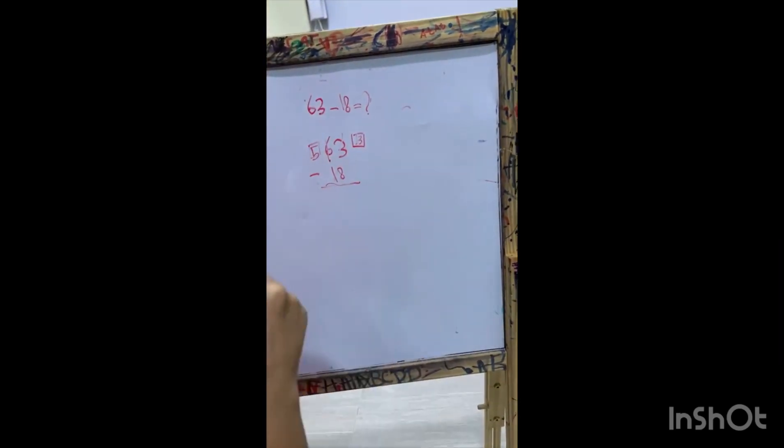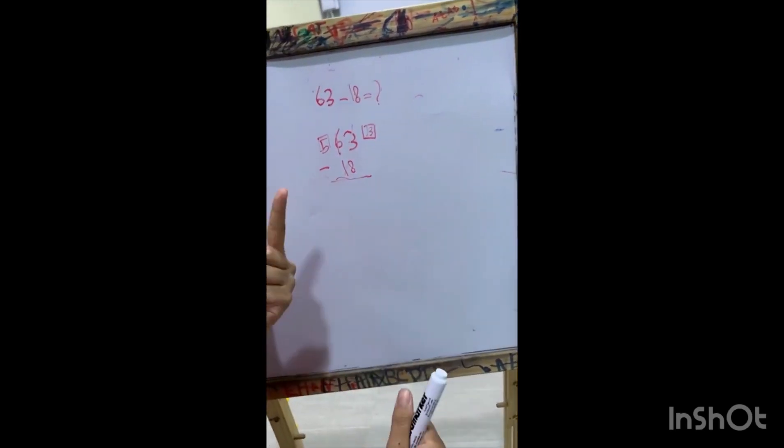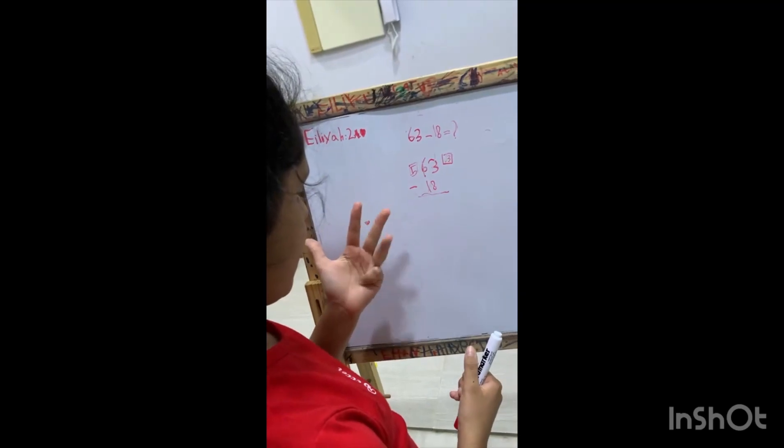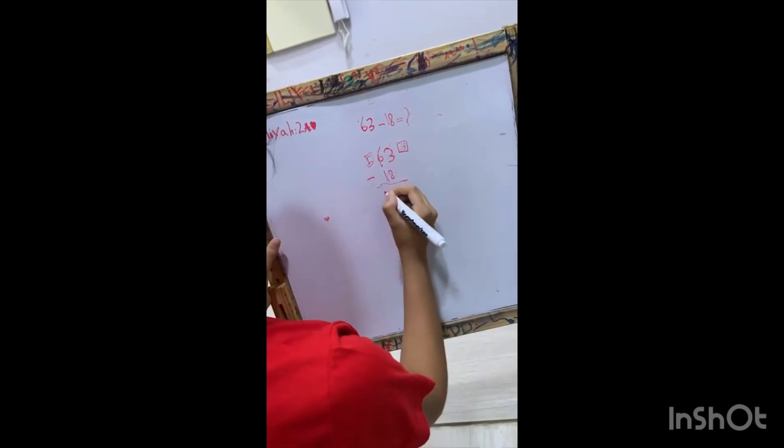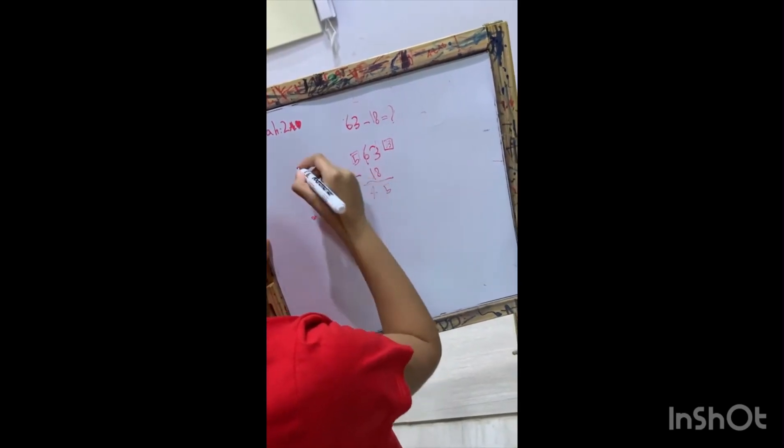Two, and minus ten, eleven, then nine. And we have five, five and four. We have forty-five. Bye, teacher.